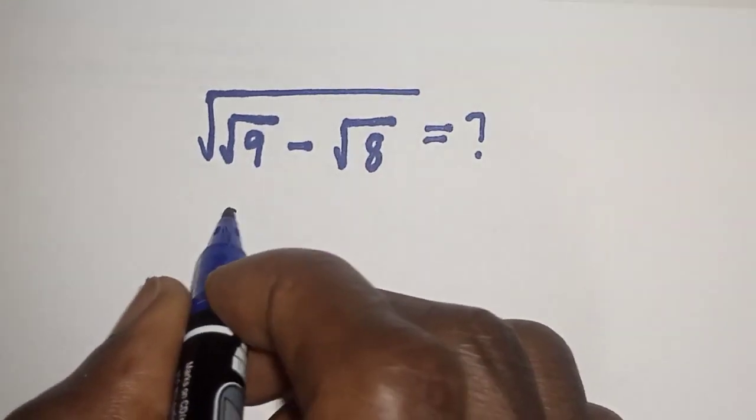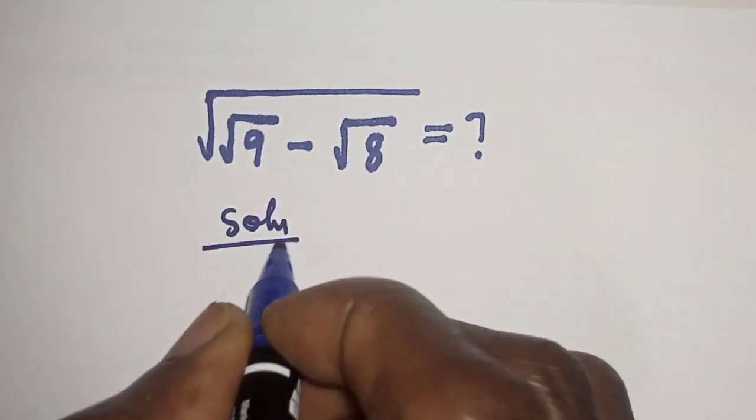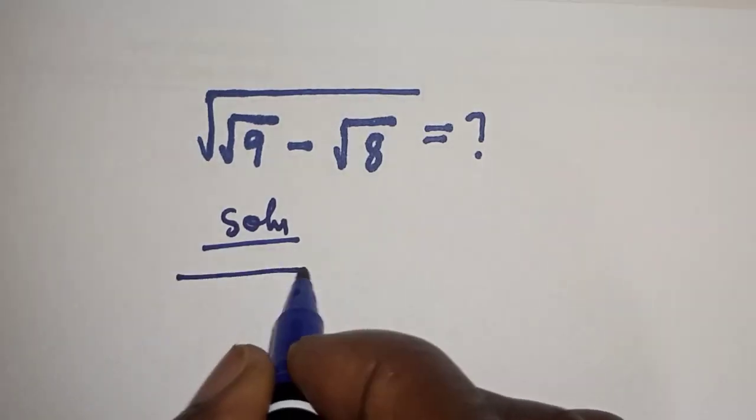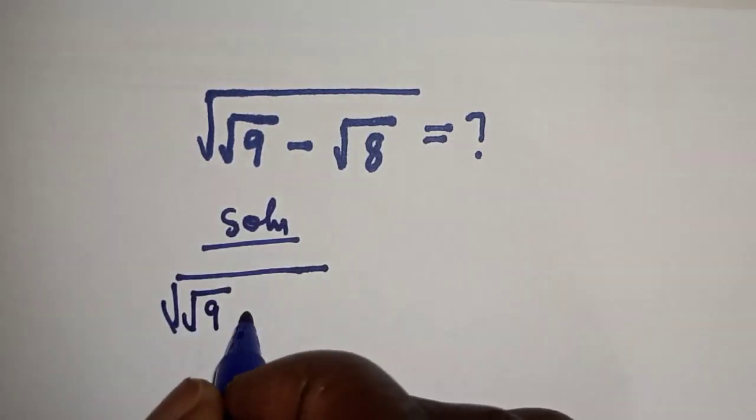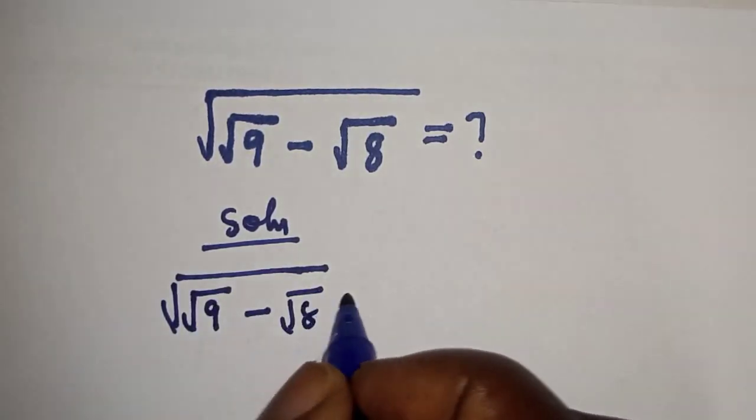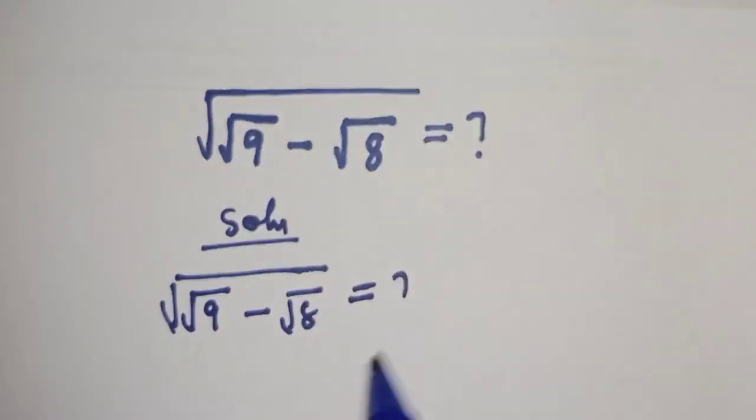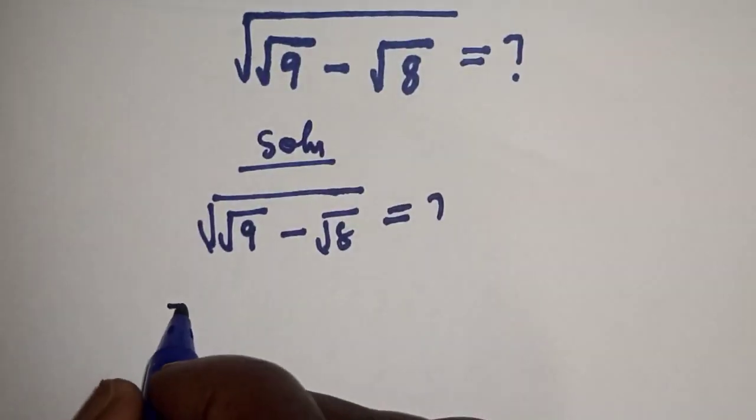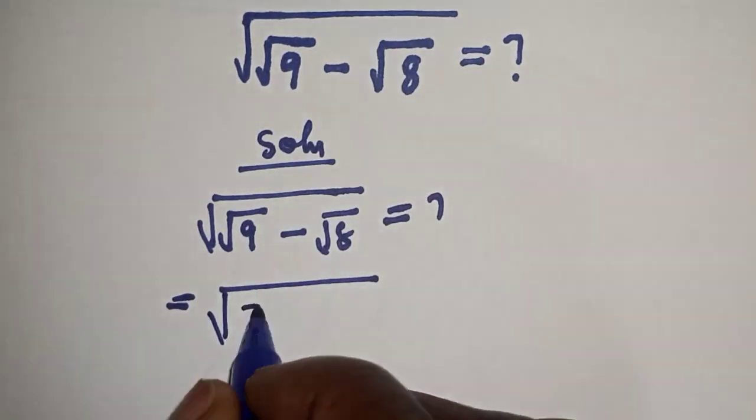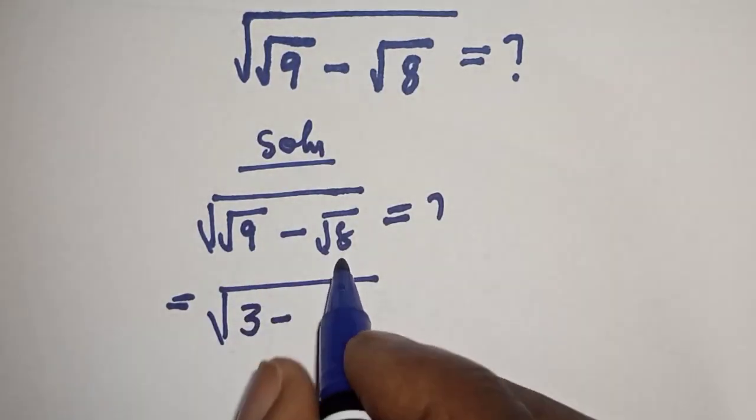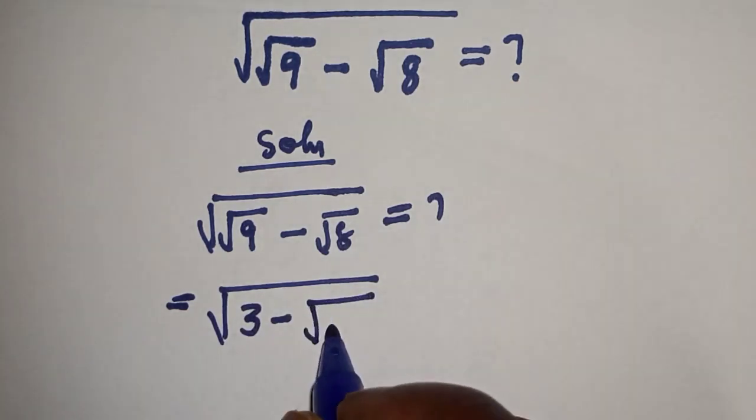comment and subscribe. Solution: We have √(√9 - √8) equals unknown. This is equal to √9 is 3, minus √8 can be written as √(4×2).